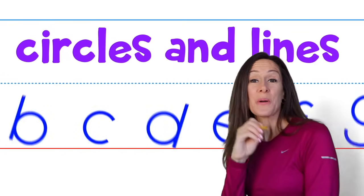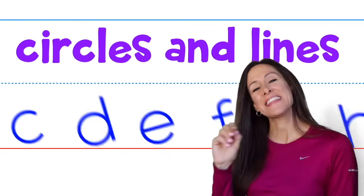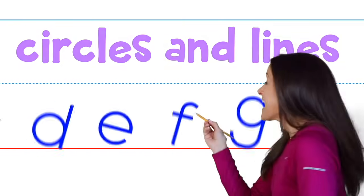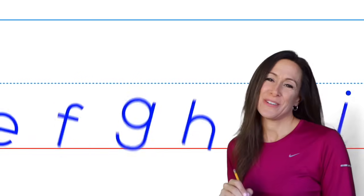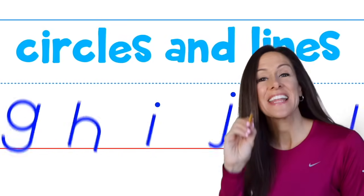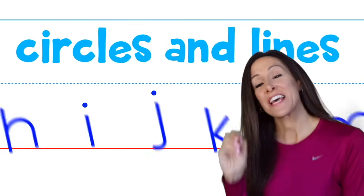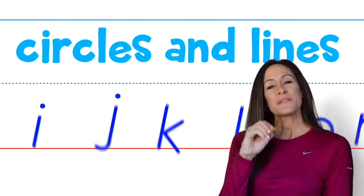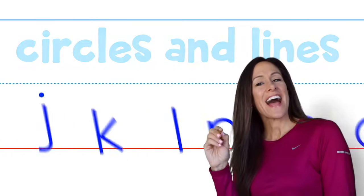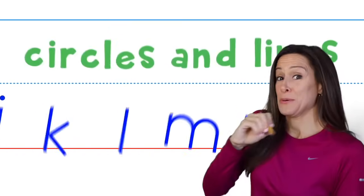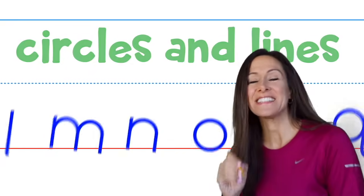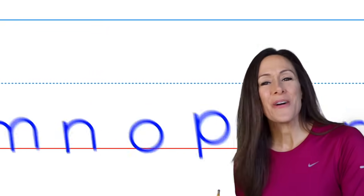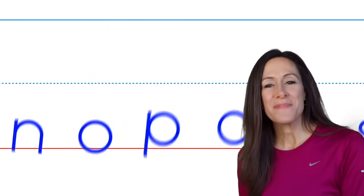Circles and lines, circles and lines. These are the letters with circles and lines. Circles and lines, circles and lines. You wrote them down one at a time.